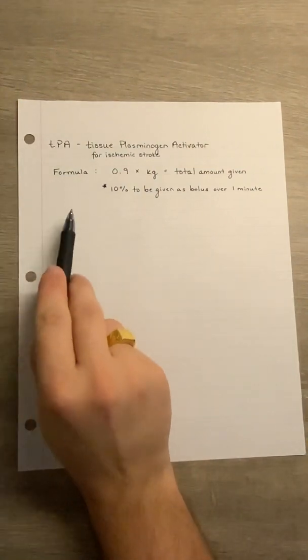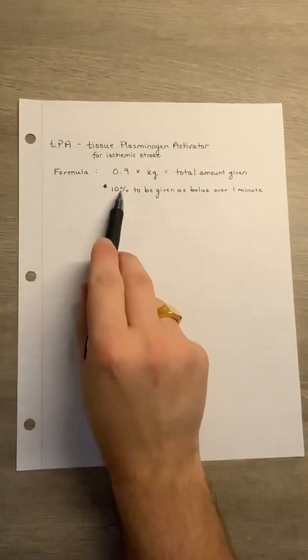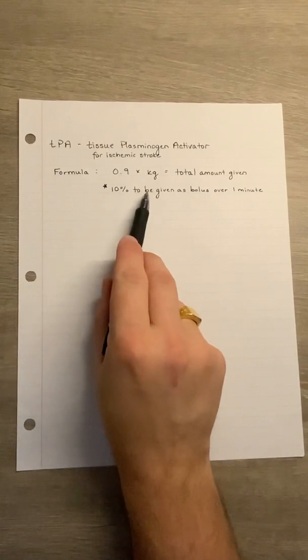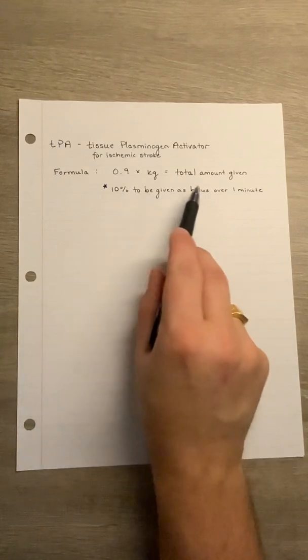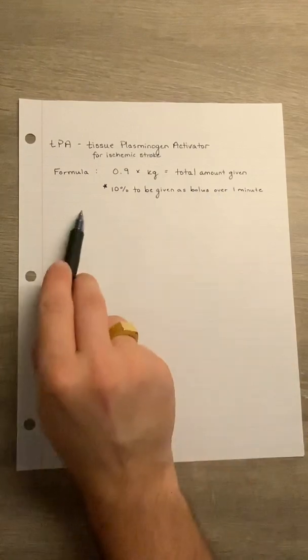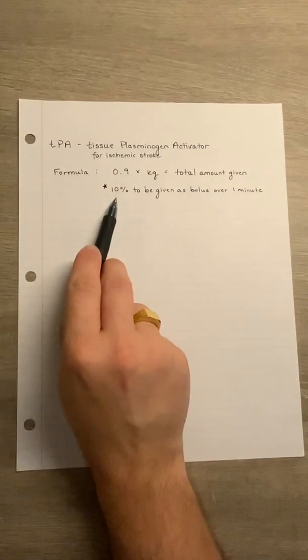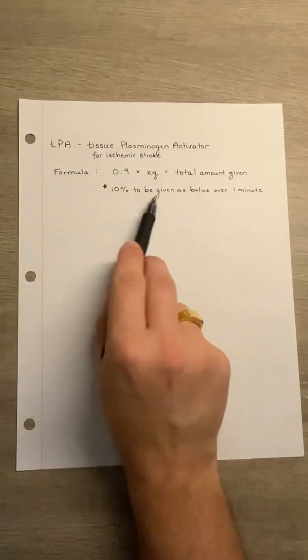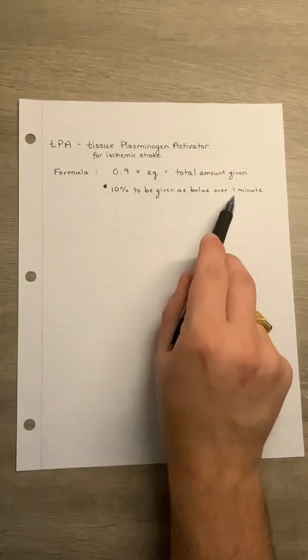So using the formula given to us, we have 0.9 times the weight in kilograms, which is going to give us the total amount to give to the patient. It's important to remember that 10% of the total amount will be given as a bolus immediately over one minute.